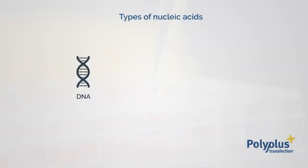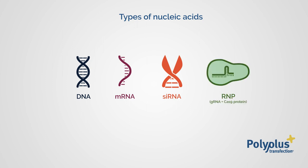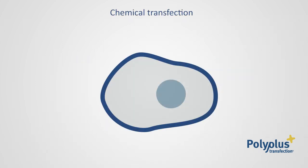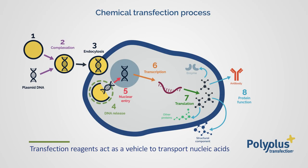Transfection consists of introducing exogenous nucleic acids, such as DNA or RNA, into mammalian cells to force the cell chemistry to start synthesizing proteins and viral particles. Nucleic acids cannot enter into a cell without the help of a transfection reagent that acts as a vehicle to transport them in.